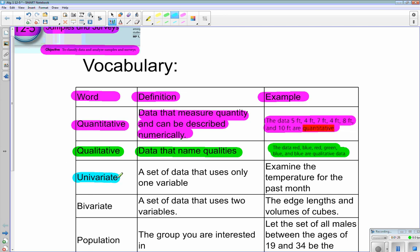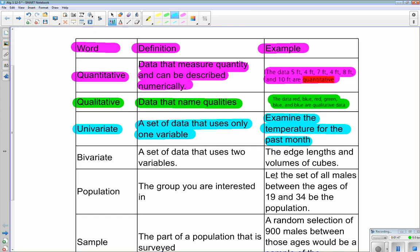All right, so univariate is a set of data that uses only one variable. Like a unicycle is a one-wheeled contraption, a univariate is a one-variable set of data. For example, examine the temperature for the past month. So there's only one item that we're examining. It's temperature, so it's univariate.